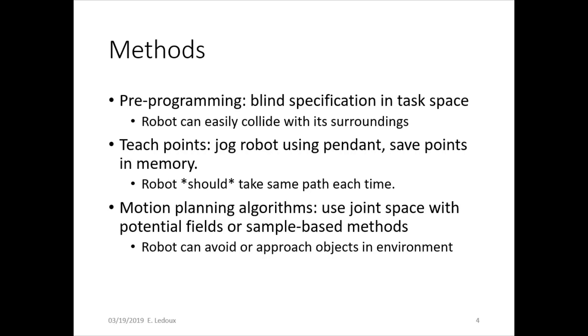Now, if you do teach points, then you can jog the robot using the pendant so it gets in whatever orientation and position, total pose, that you want it to be in so that you can make it manually go around an obstacle. Then you just save those points in the memory, like make sure the robot lifts up its object high enough that it won't collide with the barrier that it's lifting it over.